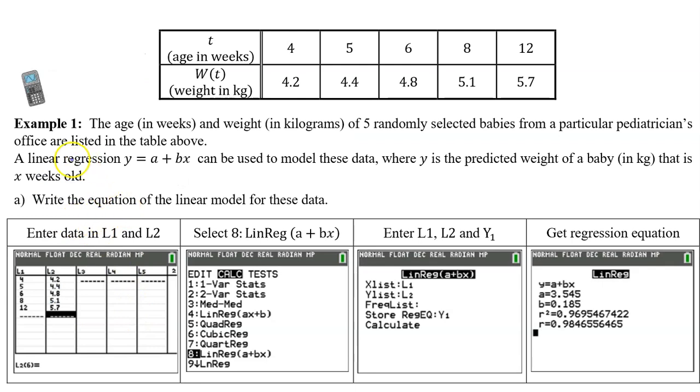Let me demonstrate using an example. Example 1: the age in weeks and weight in kilograms of five randomly selected babies from a particular pediatrician's office are listed in the table above. A linear regression, y equals a plus bx, can be used to model these data. Where y is the predicted weight of a baby in kilograms that is x weeks old. Part A, write an equation for the linear model for these data.